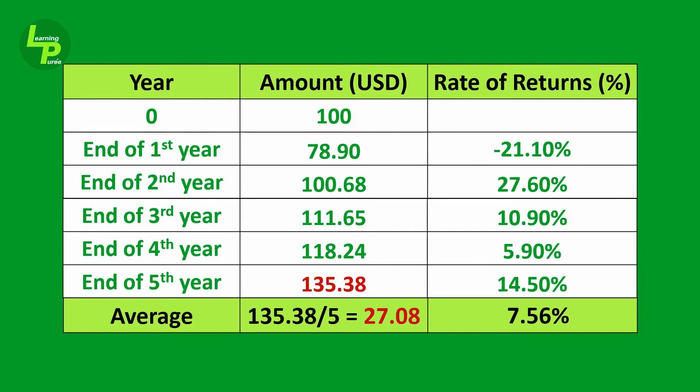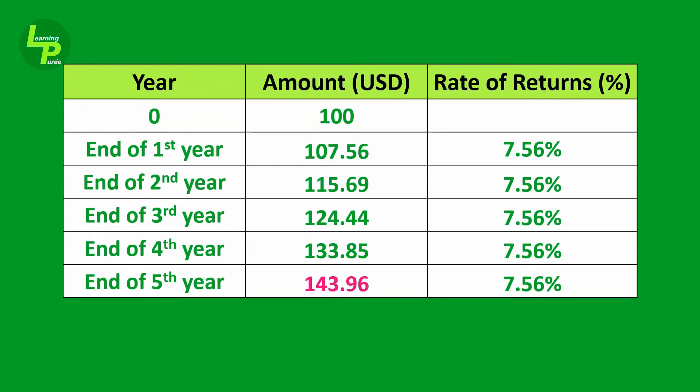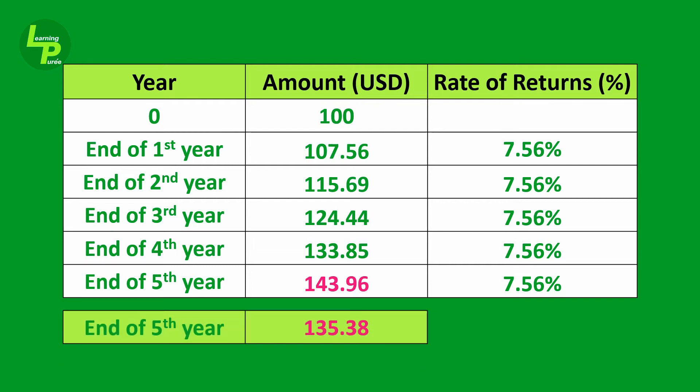Now remember the words 'average growth rate,' which means the average rate at which the investment grows every year, as against the average amount received per year. So in our pursuit of obtaining the average growth rate, if we take the arithmetic average of the column of rate of returns, we get a figure of 7.56%. Using this average growth rate of 7.56% on the same calculation for returns, we would end up with $143.96 at the end of 5 years. This is way higher than what we actually received, that is $135.38. Obviously, this average growth rate is totally erroneous.